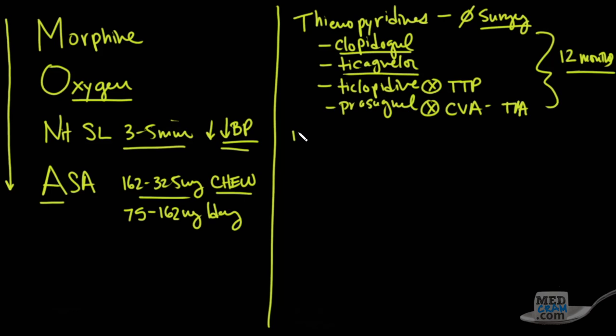Next on the list are the 2B-3A inhibitors. These inhibit fibrinogen from binding. Some of the ones that you might see here, you might know them as Integrilin. These medications are used generally as a bridge to PCI, so be aware of those.